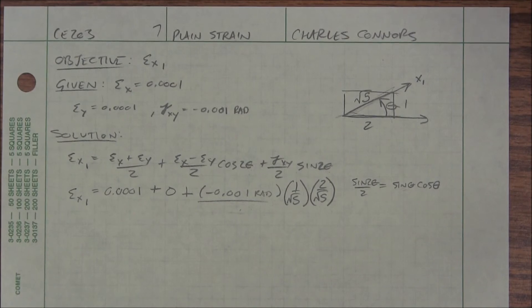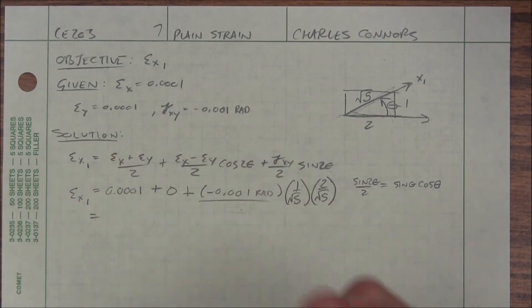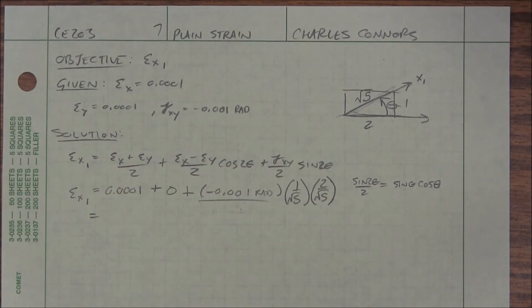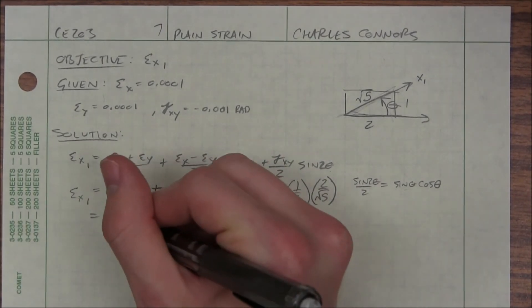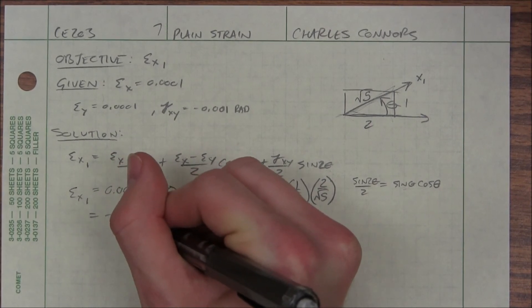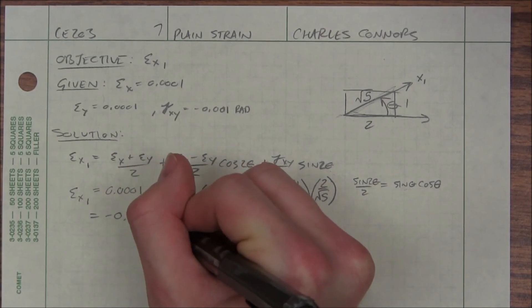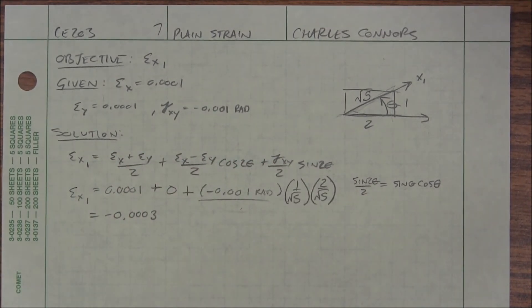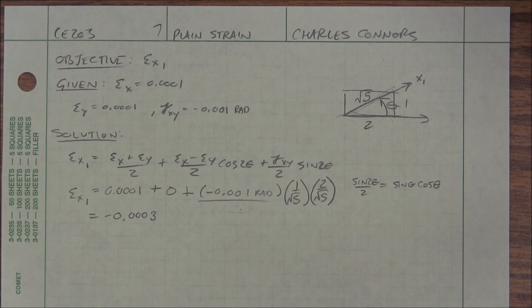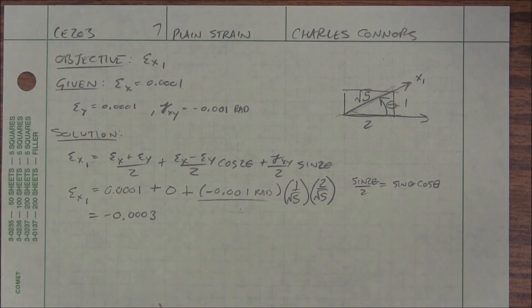I plug that into my calculator and I get negative 0.0003. What are the units of strain? Nothing — dimensionless. And that's that problem.